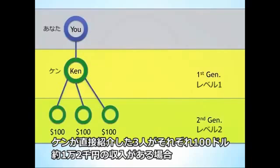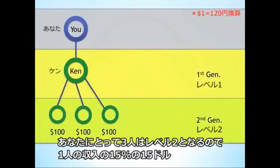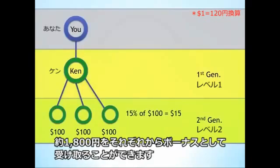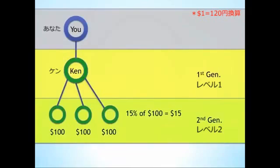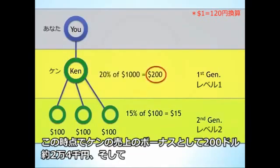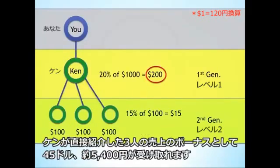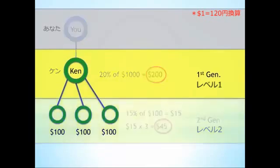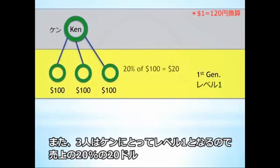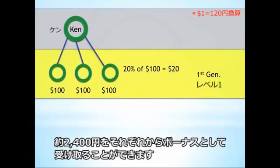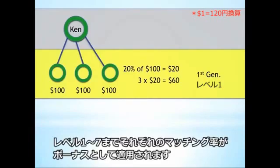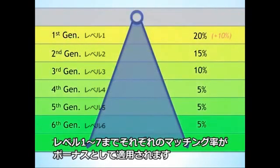If each of Ken's three personally enrolled people are earning $100 and they're on your second generation, you'll earn a bonus of 15% based on their earnings — so in this case, $15 each. Up to this point, you've earned $200 based on Ken's earnings and $45 based on Ken's people's earnings. Ken, by the same mechanism, would have earned $20 from each of his three people since they're on his first generation. This pattern continues through seven generations of your enroller tree.